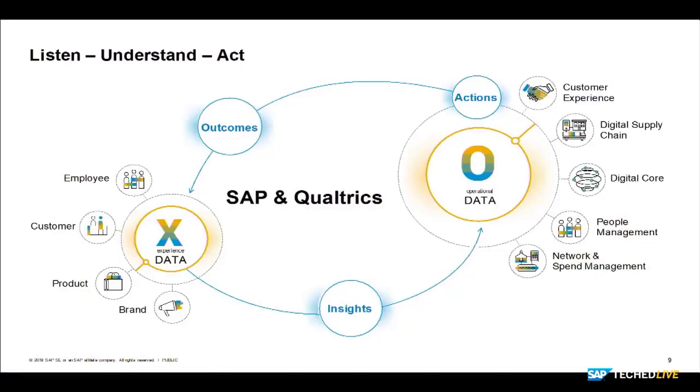As Jorgen talked about in the keynote, what you see at the bottom is the Business Technology Platform, which is that continuous feedback loop of data flowing from X to O and O to X, depending on where you want to derive the insight and then act on it. We leverage a lot of the technologies and use cases we've already worked around in the CX area. And fundamentally, the view is to create this continuous loop where operational systems drive a better experience system, and a better experience system makes your operational systems even better. We call this simply: listen, understand, and act. One without the other is not that meaningful — you can derive insights, but if you can't act on them, it's half-baked.